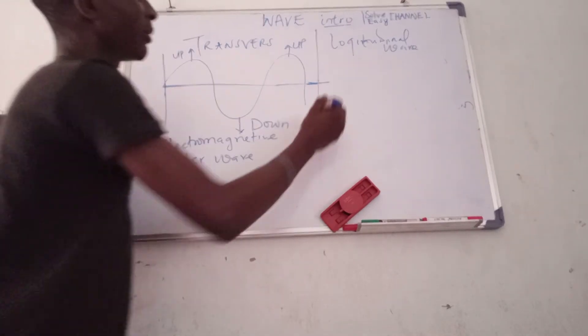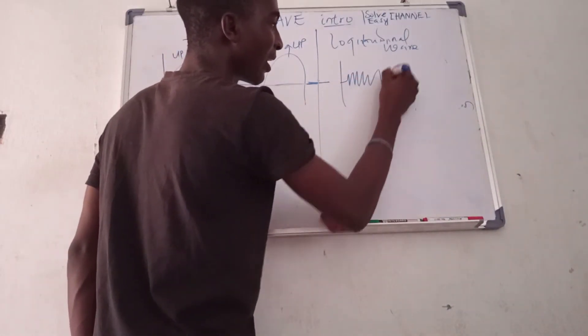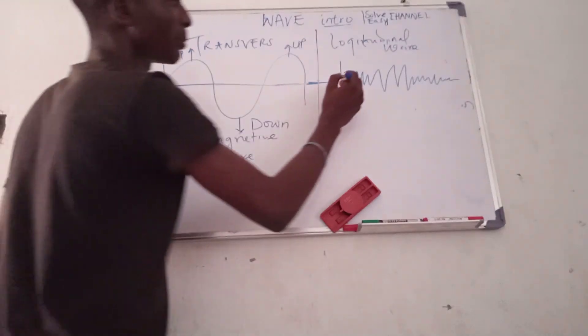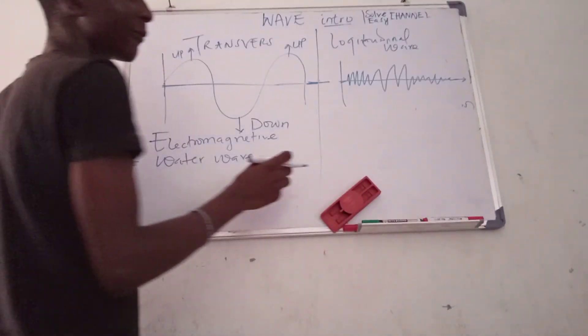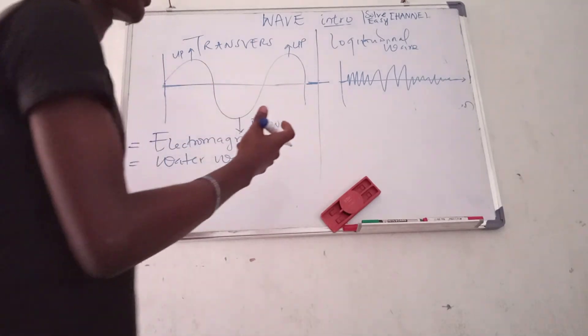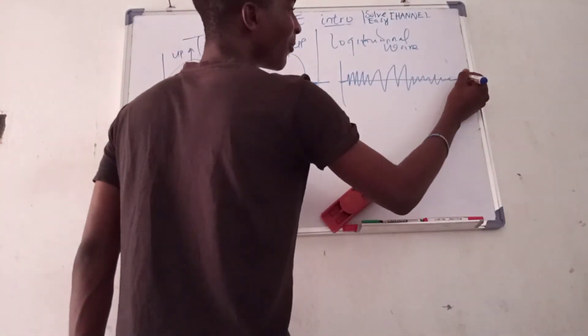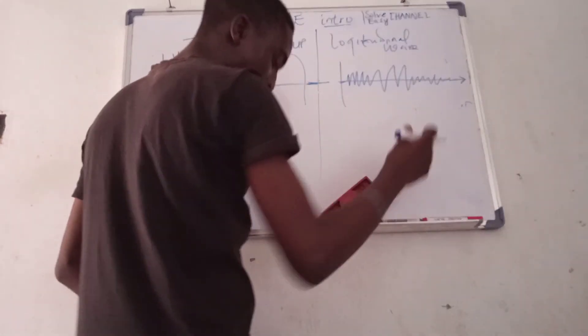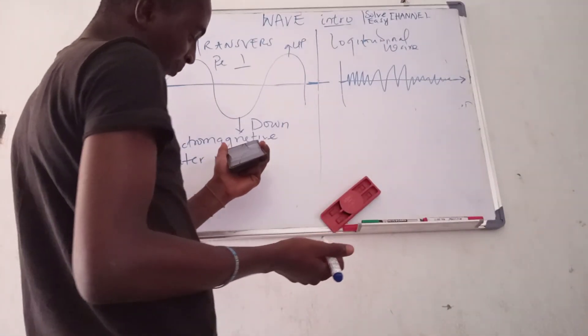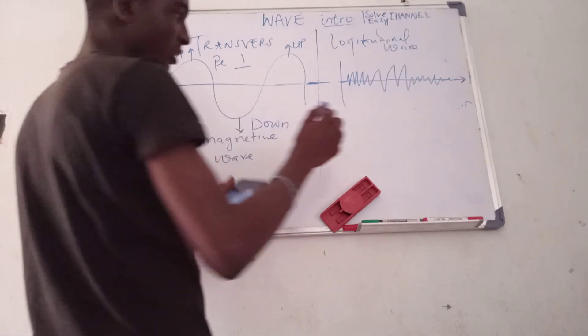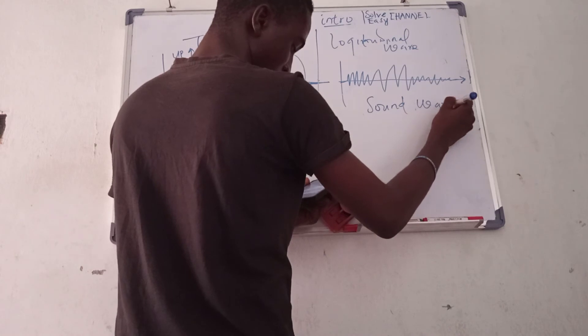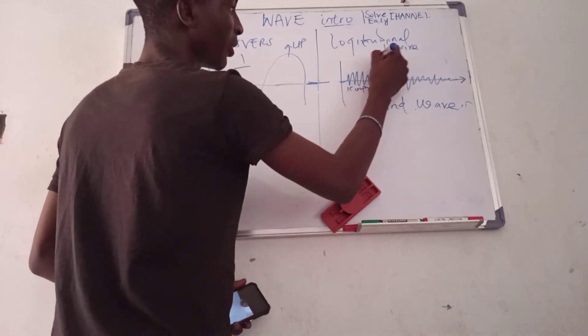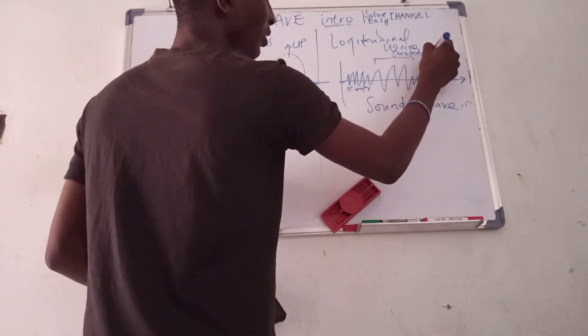But for longitudinal waves, they are waves that are like this. So they are always parallel to the direction of energy transfer. Note that transverse waves are perpendicular, while longitudinal waves are parallel. An example of a longitudinal wave is a sound wave. So at this point, the wave is compressed. At this point, it is stretched out.